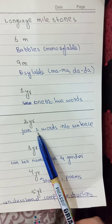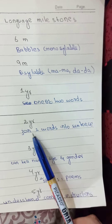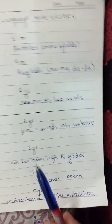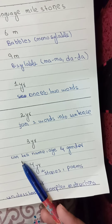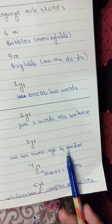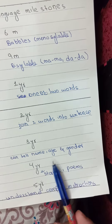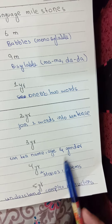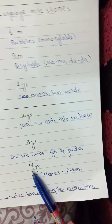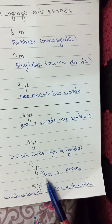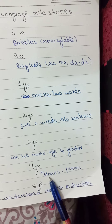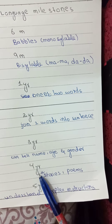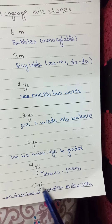At the age of two years, he begins to join words into a sentence, so sentence formation begins at two years. At the age of three years, he can tell his name, age, and gender — whether he's a boy or a girl. At the age of four years, narration starts — he can narrate stories and poems.